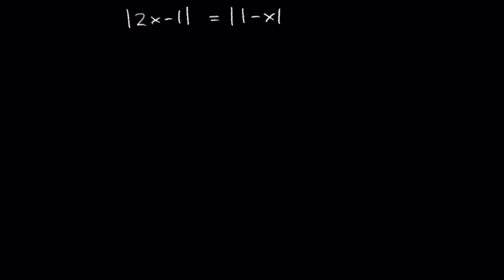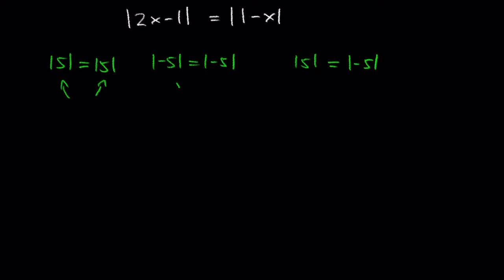I want to show you another example: the absolute value of 2x minus 1 is equal to the absolute value of 1 minus x. We might ask, when are the absolute values of two expressions equal? The absolute value of 5 equals the absolute value of 5, the absolute value of negative 5 equals the absolute value of negative 5, and the absolute value of 5 equals the absolute value of negative 5. Two absolute value expressions are equal when the expressions inside are equal or are opposites of each other.